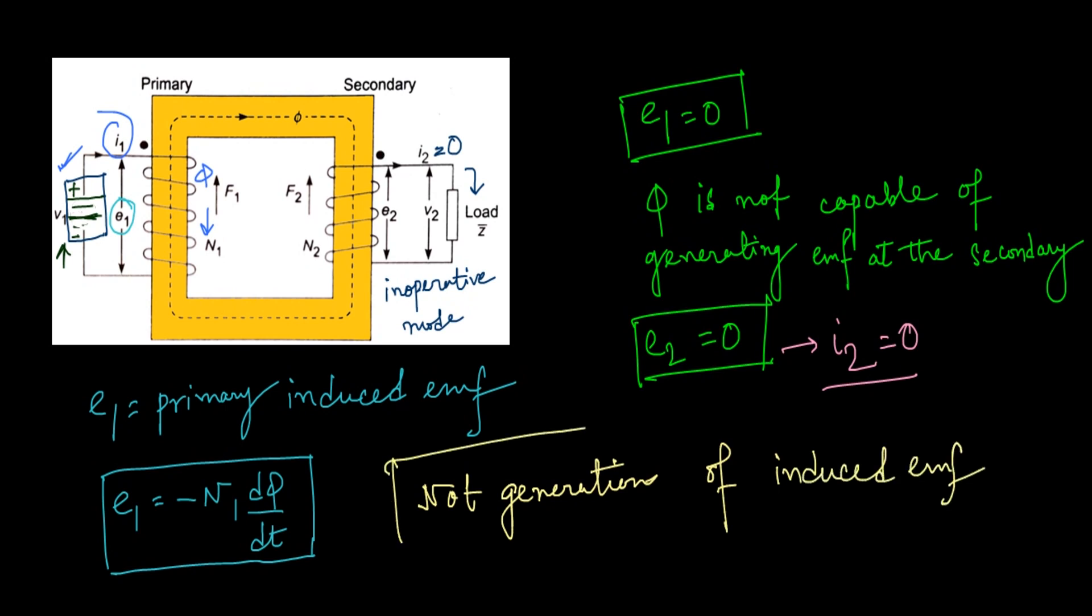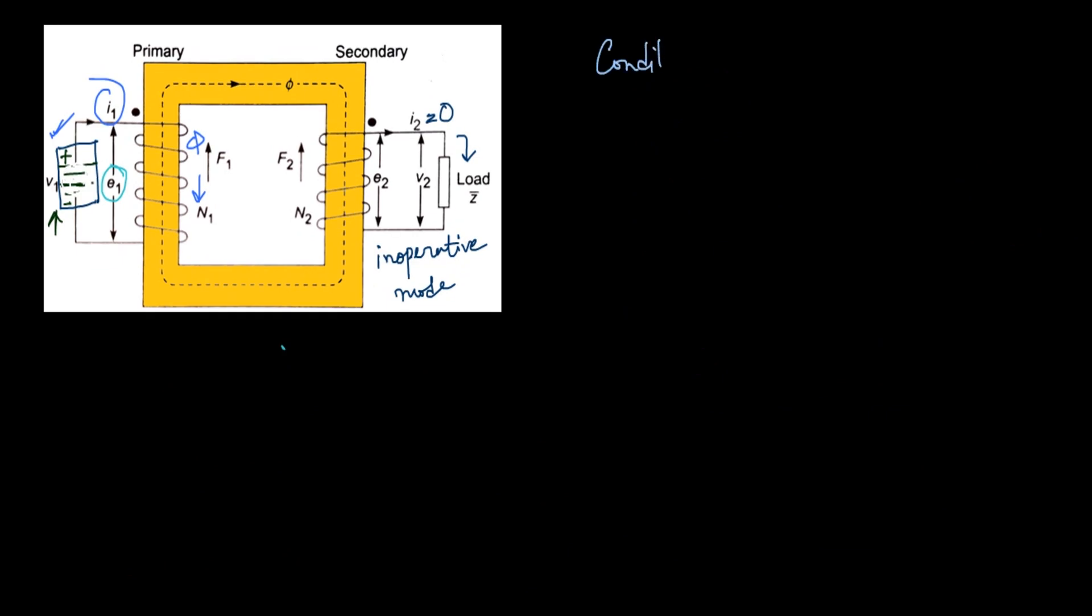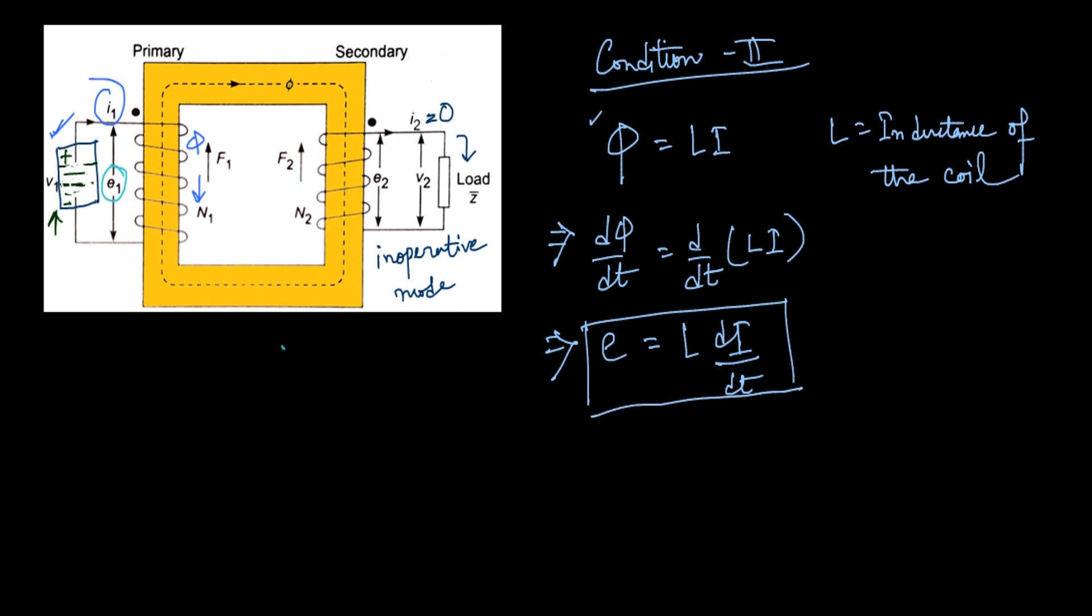Now our condition number 2. From a very famous equation, we know φ is equal to Li, where φ is your flux, L is the inductance of the coil, and I is the current. Now if we perform derivative at both sides of this equation, then we find E is equal to L dI/dt, that means induced EMF is equal to inductance times rate of change of current.